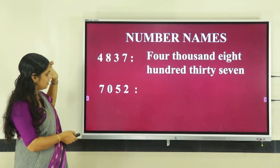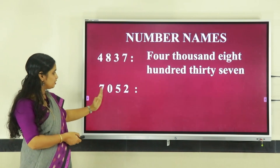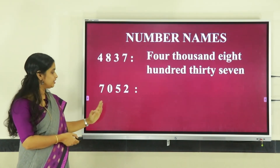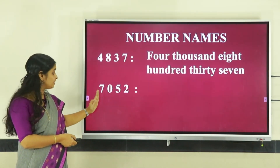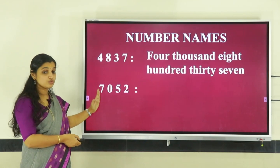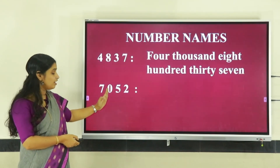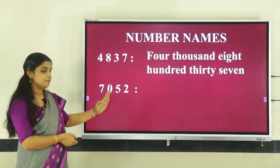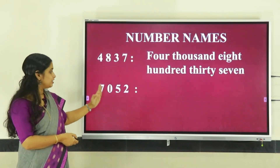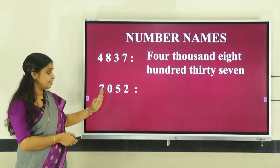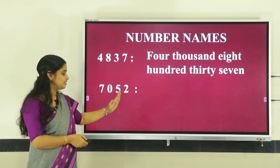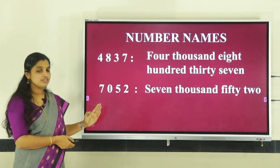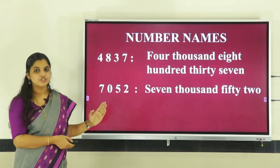Now see another example: 7, 0, 5, 2. How can we read this number? Seven is in the thousands place, so it is seven thousand. In the hundreds place you can see zero, so we omit that place and do not read it. We read the remaining digits — fifty-two. So the number is seven thousand fifty-two.